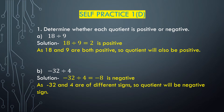Now we will solve question number 1: determine whether each quotient is positive or negative. Part A is 18 divided by 9. 18 divided by 9 equals 2, as 9 multiplied with 2 is 18. Here both 18 and 9 are positive integers, so the quotient, that is 2, will be positive. When both are positive integers, dividing gives a positive integer.